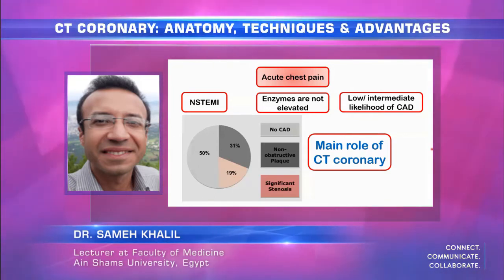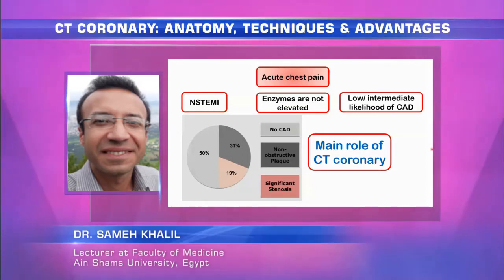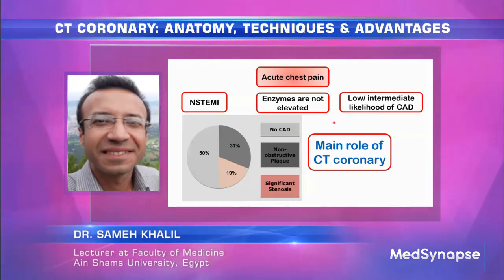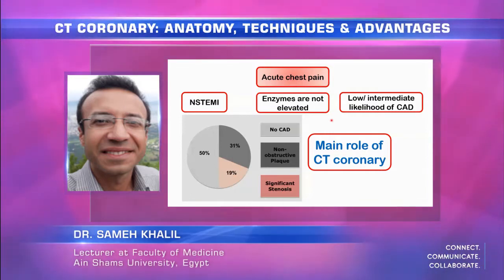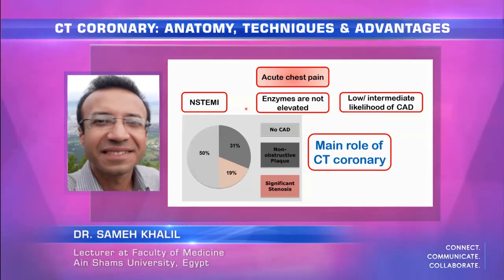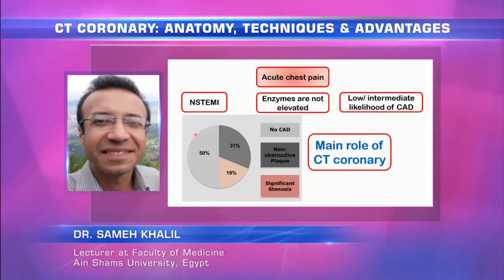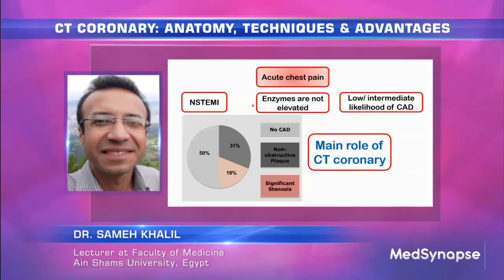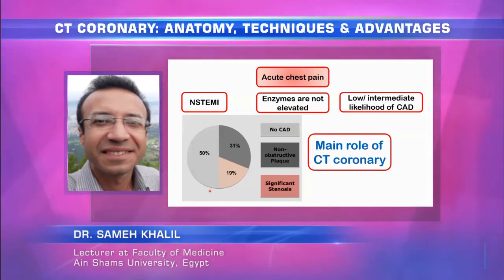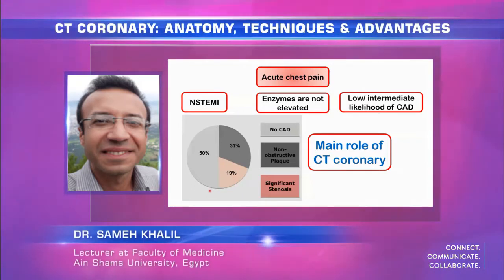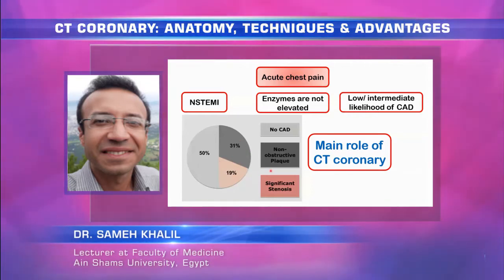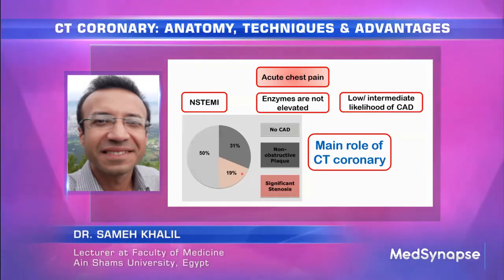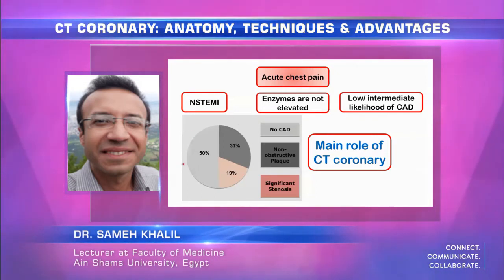CT coronary plays a role in acute chest pain for patients with low to intermediate likelihood of coronary artery disease, where enzymes are not markedly elevated and there is non-ST segment elevation. Approximately 50% of such patients will have a negative study, 31% will have non-obstructive plaque only, and only 20% will have significant stenosis requiring intervention — allowing us to exclude about 81% of patients from catheterization.